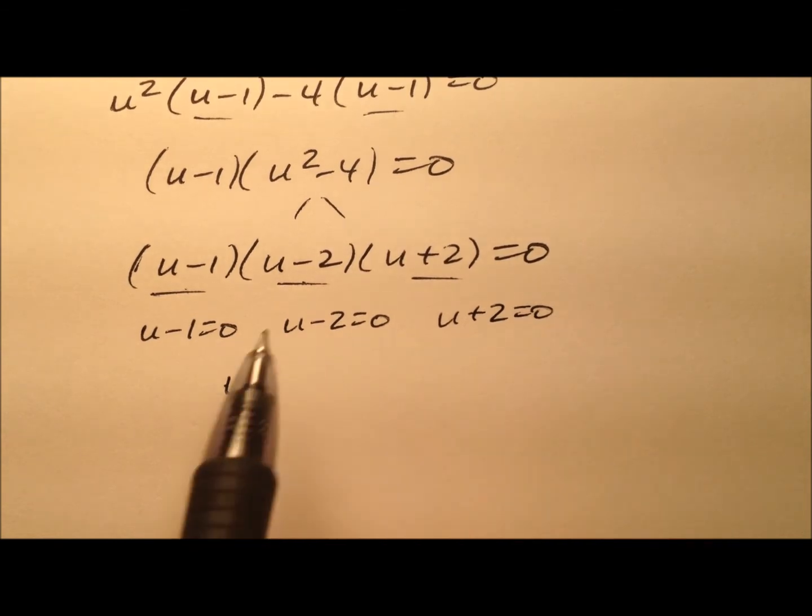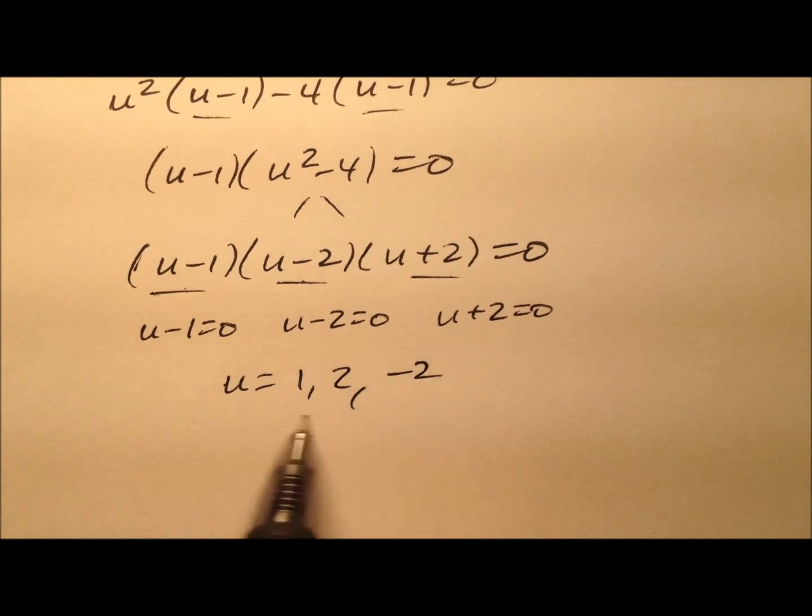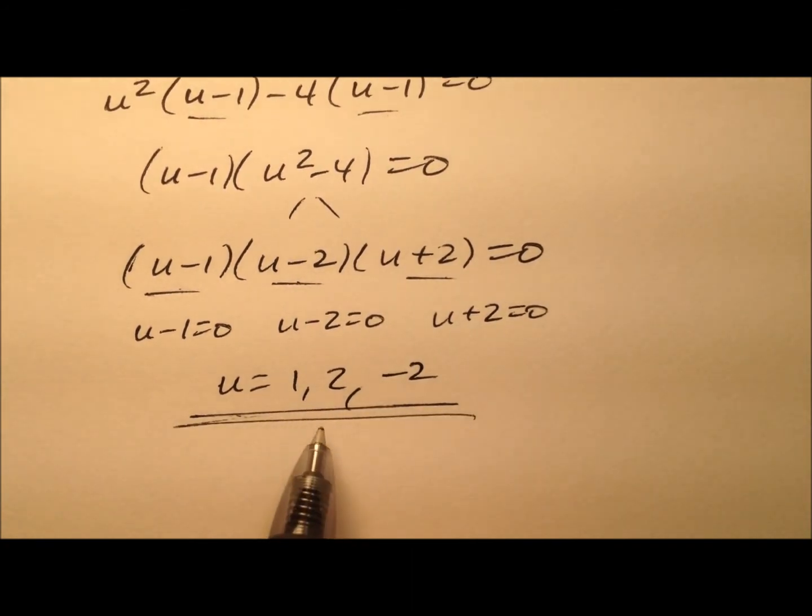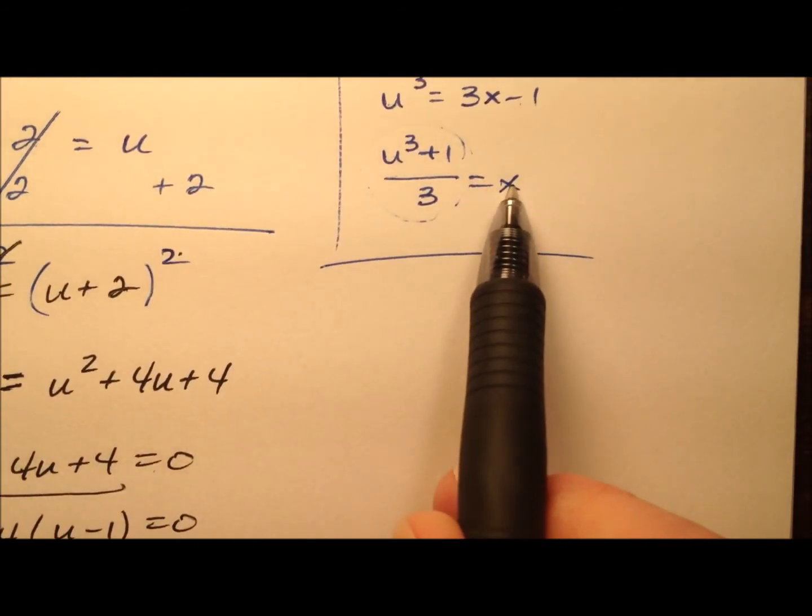So we have u equals positive 1, positive 2, and negative 2. So three possible values here that are going to work. So let's change all these u's back to in terms of x.